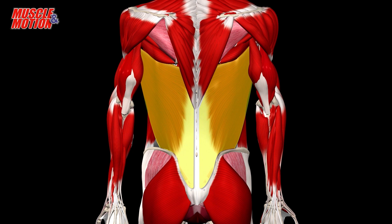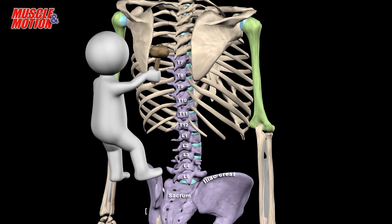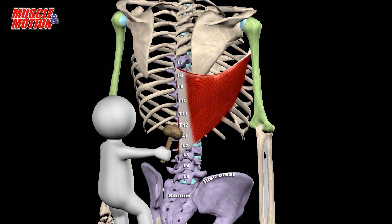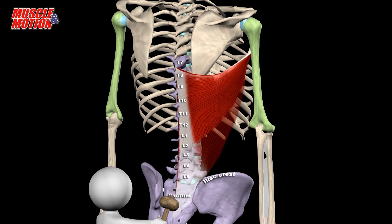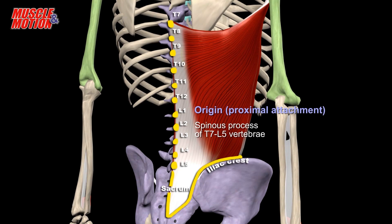As we can see, the Latissimus Dorsi originates from several anatomical areas. Its tendon spans proximal attachments from the middle thoracic region — specifically the spinous processes of vertebrae T7 through T12.